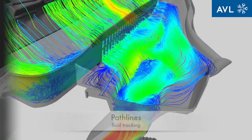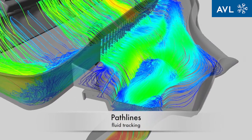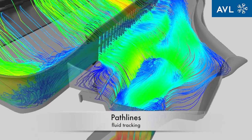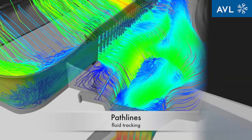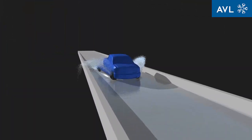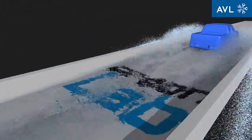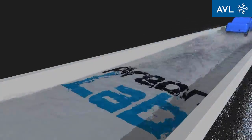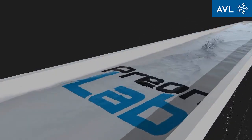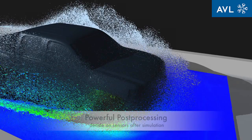Fluids can be tracked through pathlines in order to determine the origin and act accordingly if needed. Visualization and rendering in PrionLab enable users to produce attractive and effective animations. Powerful 2D and 3D post-processing leads to in-depth understanding of the problem.